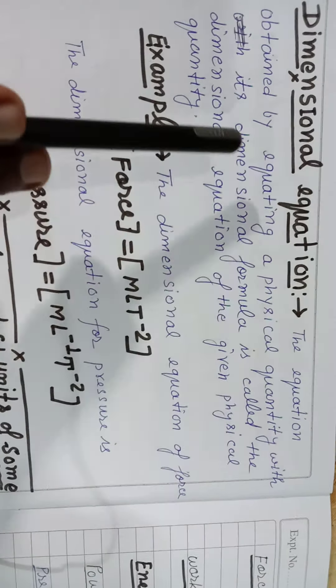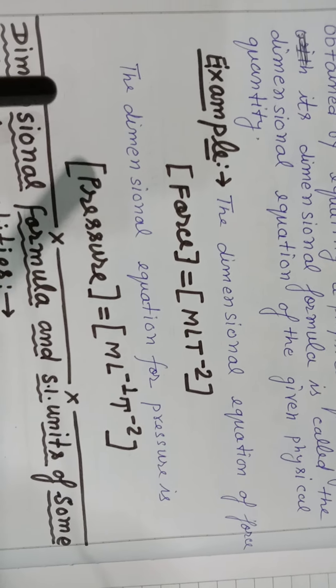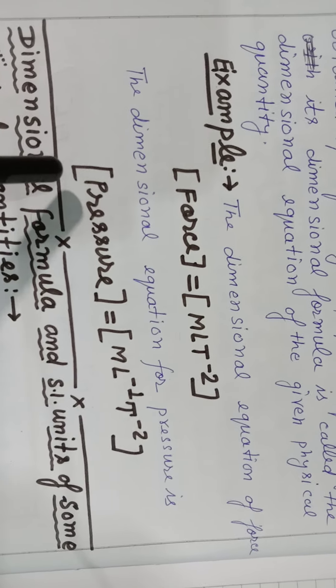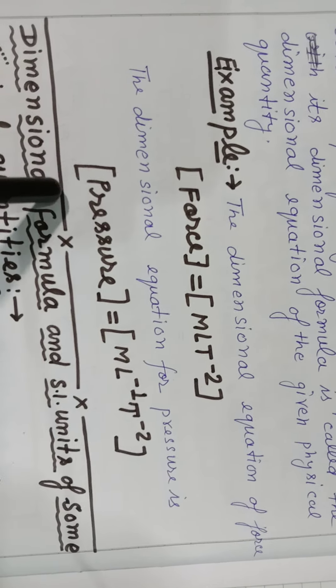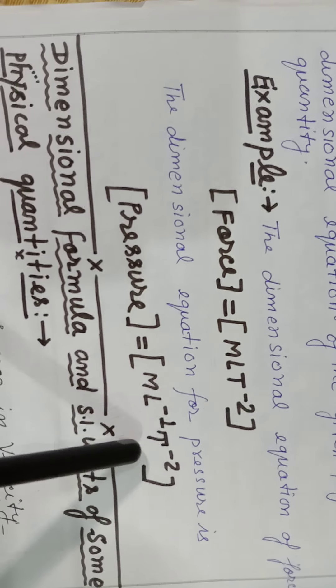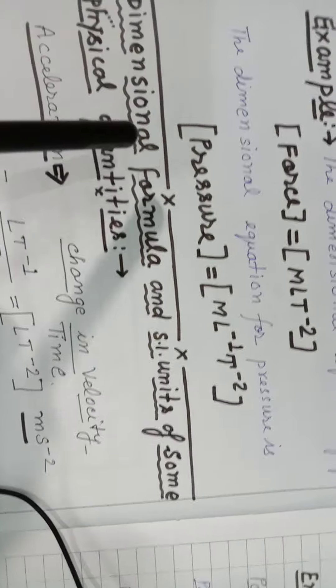Dimensional equation of Force: Force is equal to its dimensional formula, so the dimensional equation of Force becomes F = [MLT⁻²]. Just like Pressure: Pressure is equal to its dimensional formula, so the dimensional equation of Pressure is written accordingly.